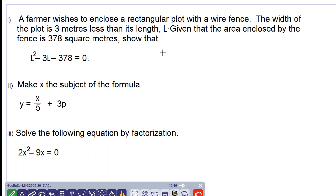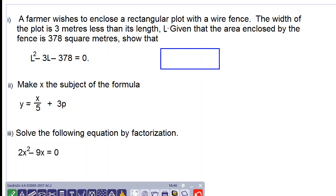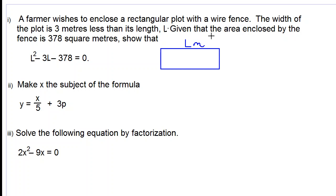So let's do a little diagram of the rectangular plot. Let us write in the length L which is in meters and the width is 3 meters less than its length so the width would be L subtract 3 meters and the area is 378 meters squared.